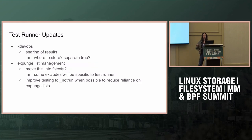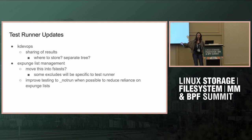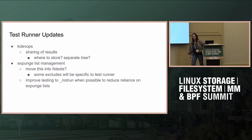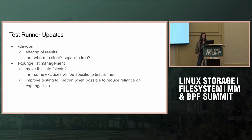On kdevops, there were some comments on my proposal for how to share results — I'm not sure where to store them, in a separate tree or not, but we can cover that in the next session. On expunge list management: lots of people who run this have their own lists excluding different tests, and there are suggestions to move some of this into FSTests, which makes sense for some cases, but different test runners will exclude for different reasons so you can't move everything. In general, when we can store common stuff into FSTests, we should try to go that way to deduplicate things.